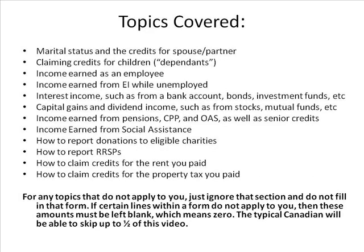The following topics are covered by this video: marital status and the credits for spouse and partner, claiming credits for children and dependents, income earned as an employee, income earned from EI while unemployed, interest income, capital gains and dividend income, income earned from pensions, CPP and OAS as well as senior credits, income earned from social assistance, donations to eligible charities, RRSPs, credits for rent, and credits for property taxes. For any topics that do not apply to you, just ignore that section and do not fill in that form. If certain lines within a form do not apply to you, these amounts must be left blank, which means zero. The typical Canadian will be able to skip up to half of this video.